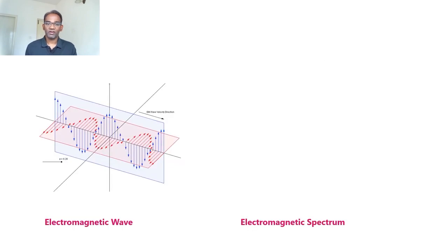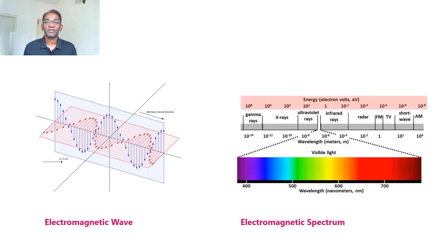We already know that electromagnetic waves comprise of mutually perpendicular electric and magnetic fields, and the electric and magnetic fields are also perpendicular to the direction of propagation. The electromagnetic spectrum is an arrangement of electromagnetic waves according to their increasing frequency, starting from radio waves to gamma rays.